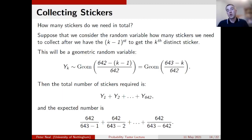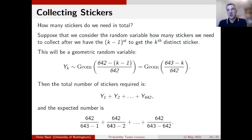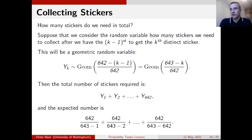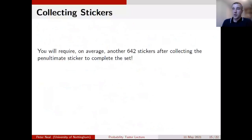Using E[X] equals 1/p at each stage, we take the probability of success at each step — the chance the next sticker is distinct — and flip it over. The expected total is 642/642 plus 642/641 plus 642/640, and so on, all the way down to 642/1. The first term is 1, the second is just over 1, but by the 642nd term it's 642 — meaning on average it takes us 642 stickers to collect the penultimate distinct sticker in our set.